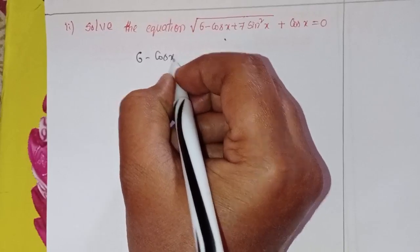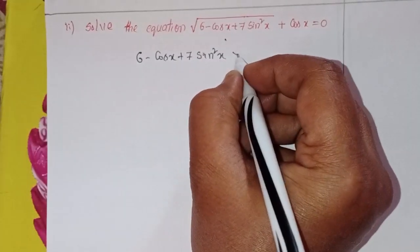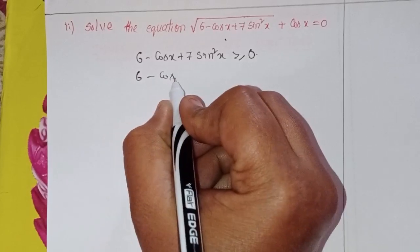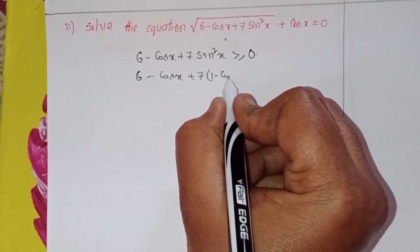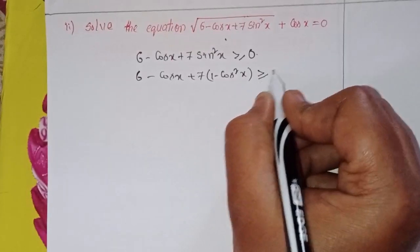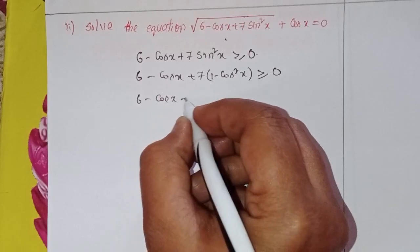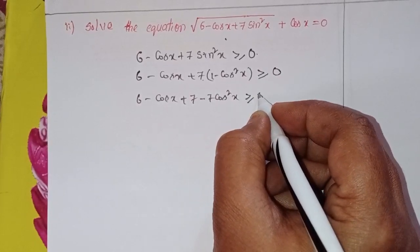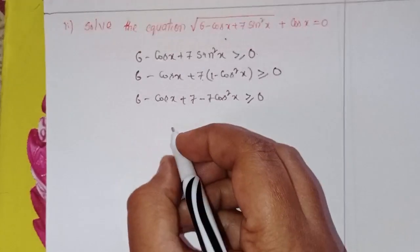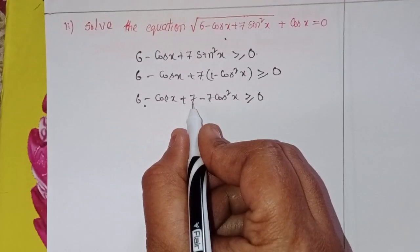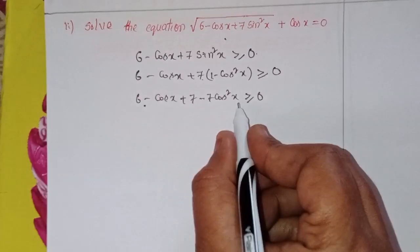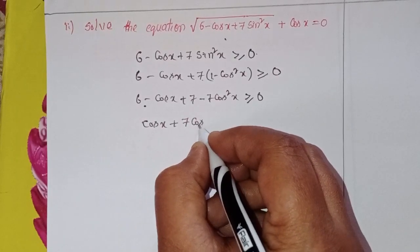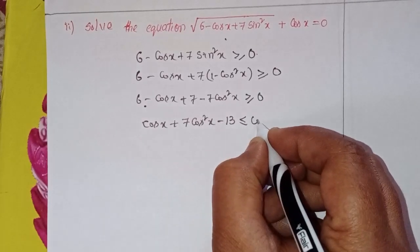First, the expression inside the square root must be non-negative: 6 minus cos x plus 7 sin²x is greater than or equal to 0. Substituting sin²x = 1 minus cos²x: 6 minus cos x plus 7(1 minus cos²x), which simplifies as 13 minus cos x minus 7 cos²x, so 7 cos²x plus cos x minus 13 is less than or equal to 0.